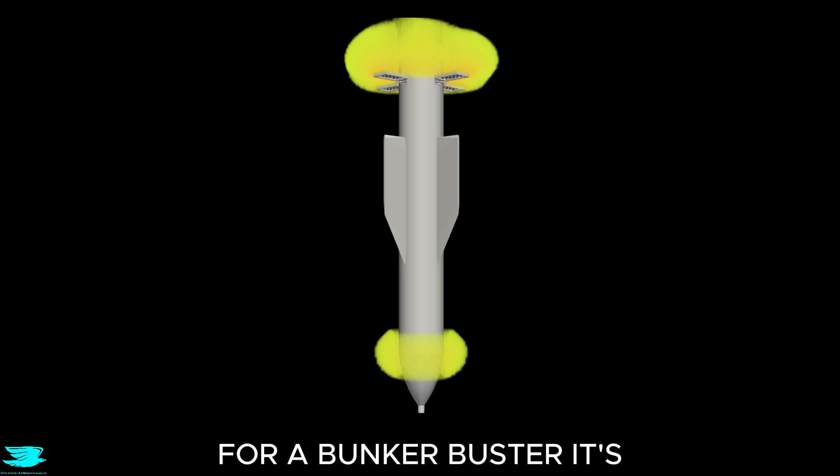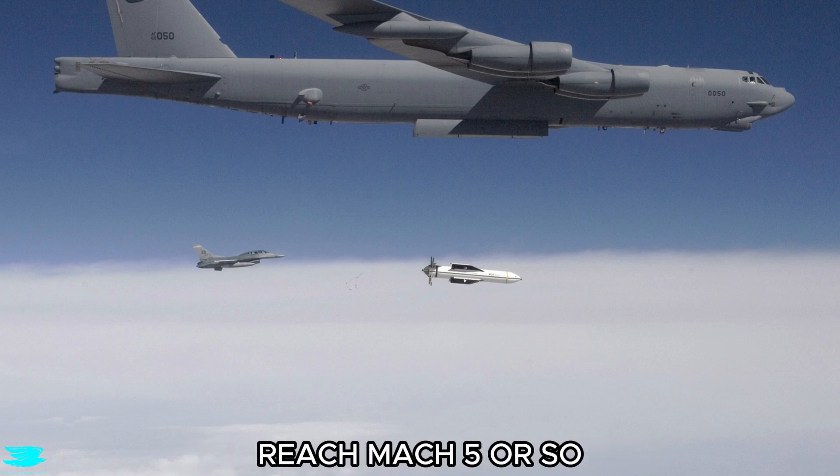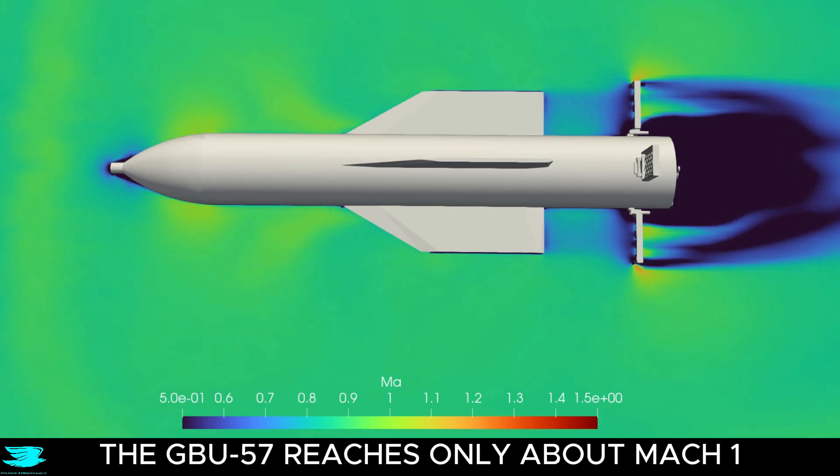For a bunker buster, it's actually relatively slow. Where other bunker busters reach Mach 5 or so, the GBU-57 reaches only about Mach 1.